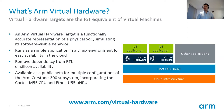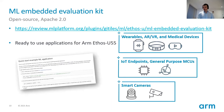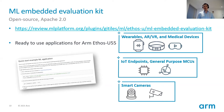To get started writing applications for the Ethos U55, we've introduced the ML Embedded Evaluation Kit — an open source project run by Arm, available under the permissive Apache 2 license at review.mlplatform.org. It contains a number of already-developed machine learning applications for the Ethos U55 system, so you don't need to start from zero. You can study them, change them, or use them as inspiration to create a completely new use case.